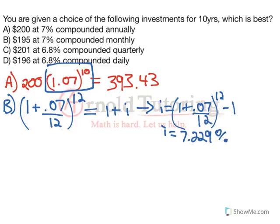Which you would expect it would be slightly higher than 7%, because 7% compounded monthly will catch up to something actually greater than 7 based on the compounding. So our final amount is going to be 195 times 1.07229, because that's our effective annual at 10 years. And this equals $391.88.